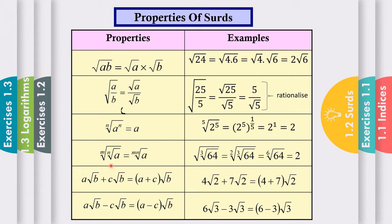Property 4: if you have the m-th root of the nth root of A, this equals the (m times n)-th root of A. For example, the square root of the cube root of 64 — since no index written means square root — you multiply 2 and 3 to get the 6th root of 64. Press the calculator and you get 2.